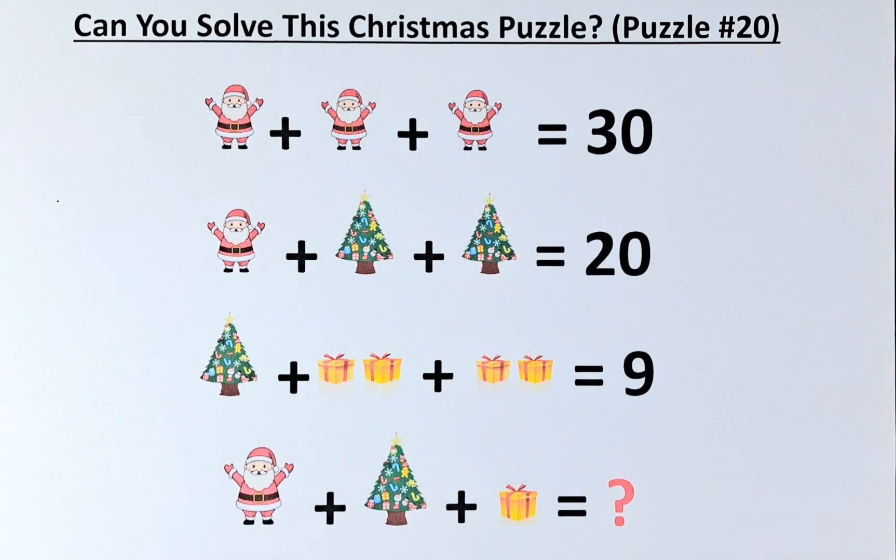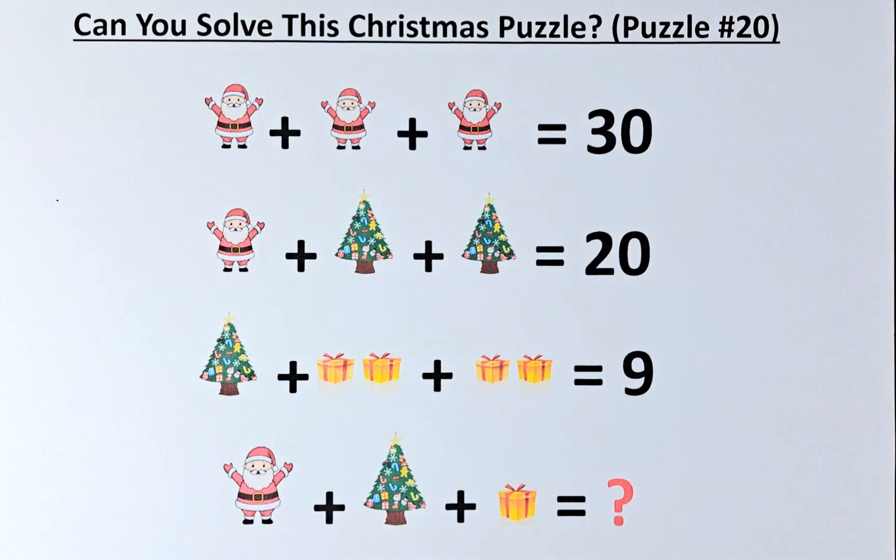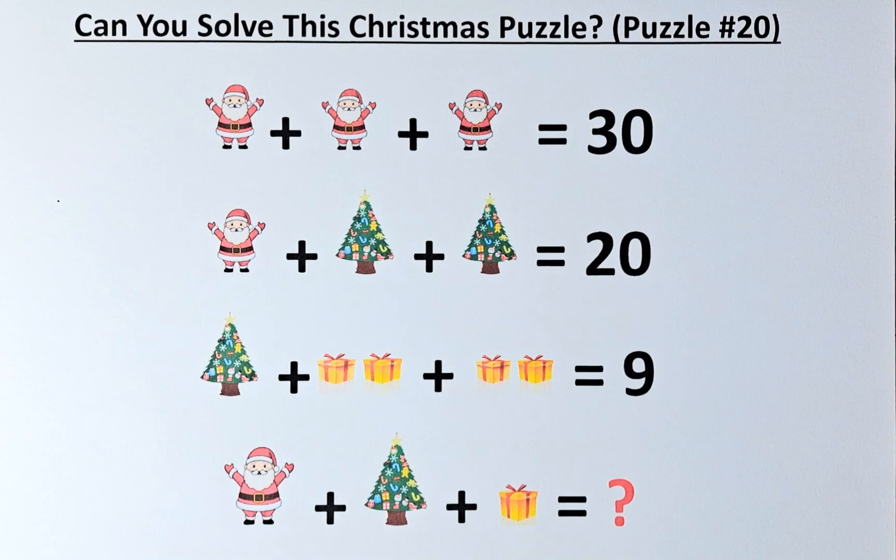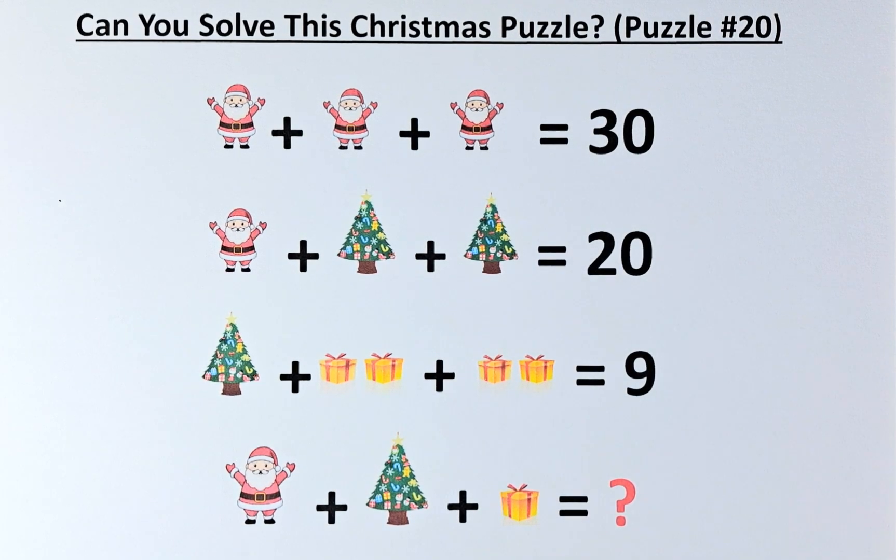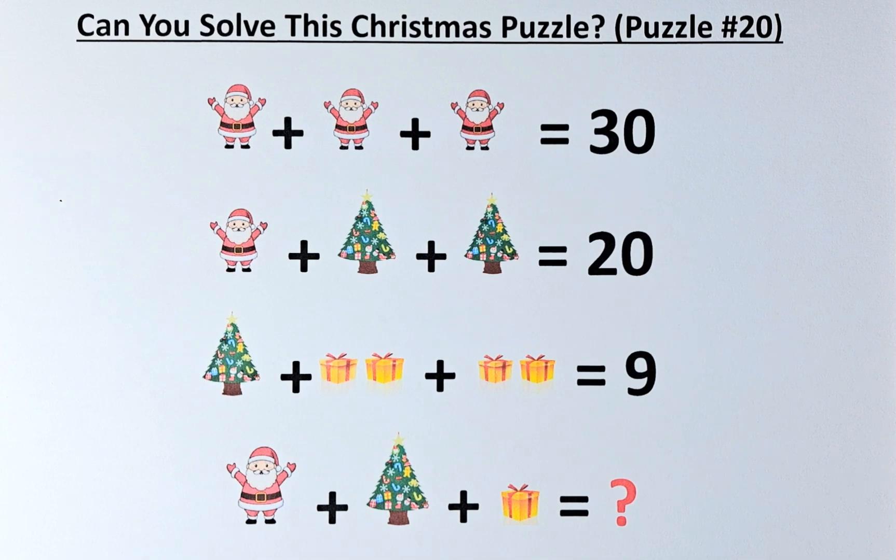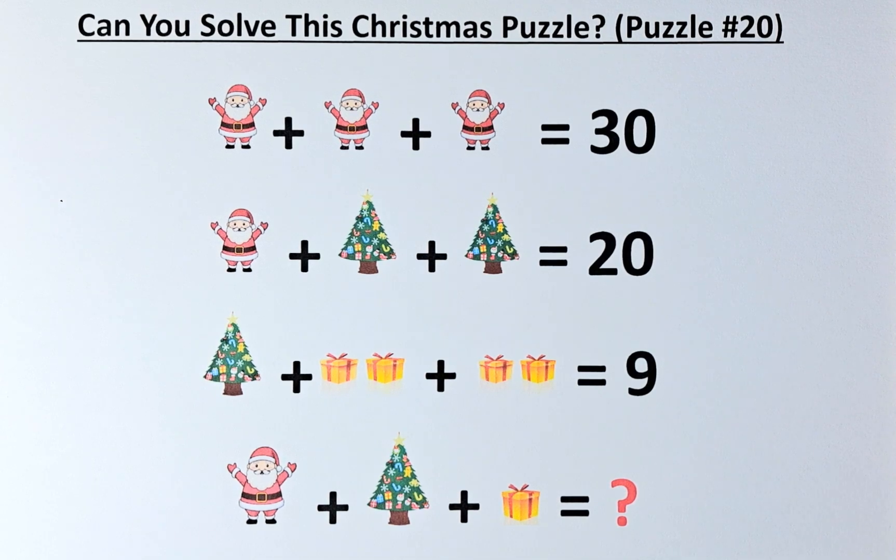If Santa Claus plus Santa Claus plus Santa Claus equals 30, Santa Claus plus Christmas tree plus Christmas tree equals 20, Christmas tree plus present plus present equals 9, what then is Santa Claus plus Christmas tree plus present?